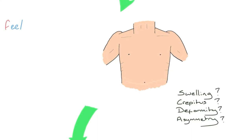We're also feeling for equal chest expansion — placing each hand on each side of the chest and checking for a good symmetrical rise and fall. We can look for paradoxical chest movement, where a piece of rib moves independently from the rest of the chest wall. We can also feel for any swelling going on with the chest.